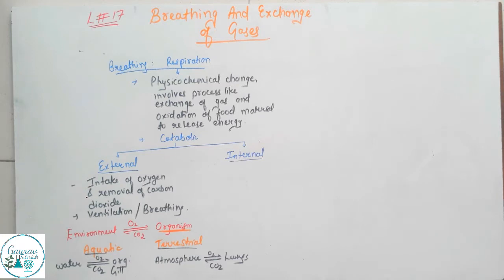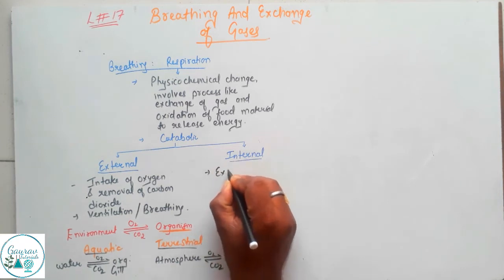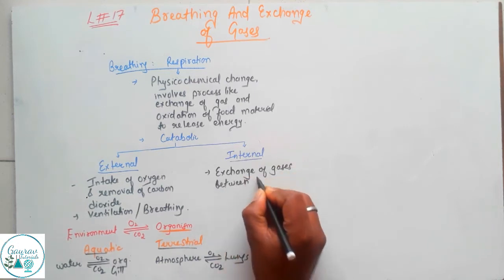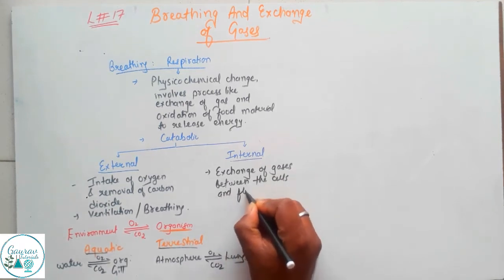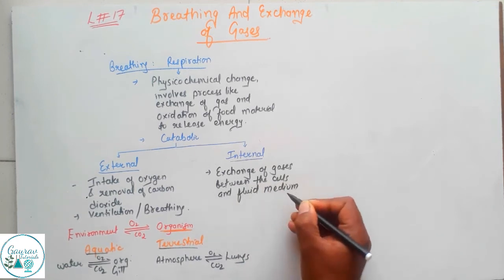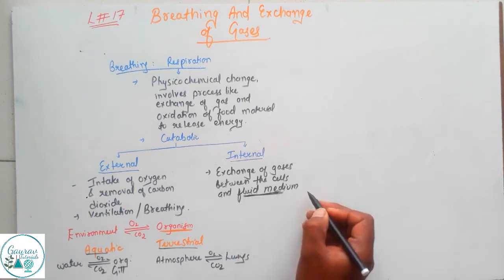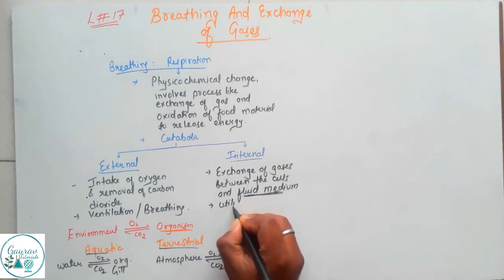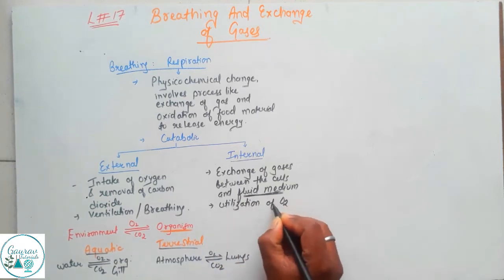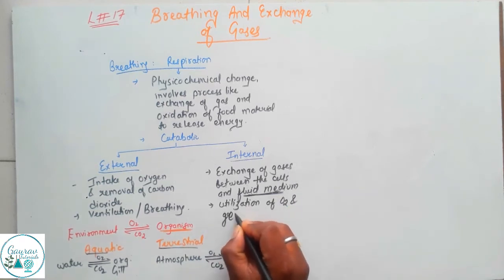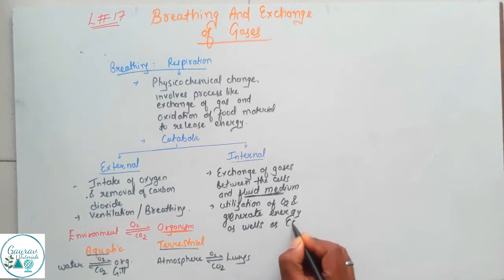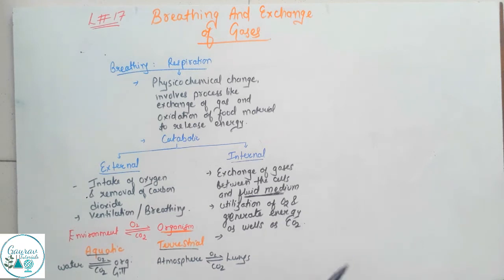Now let's go to internal respiration. Internal respiration includes exchange of gases between the cells and the fluid medium. When you talk about fluid medium, you are basically talking about blood. This involves the utilization of oxygen, generation of energy, as well as production of carbon dioxide.